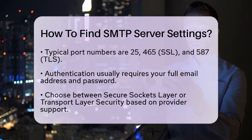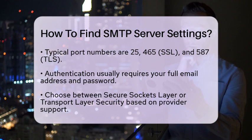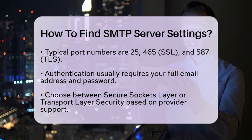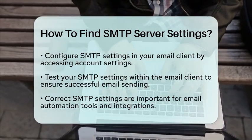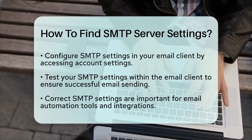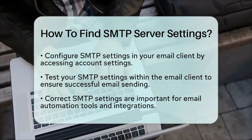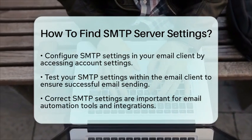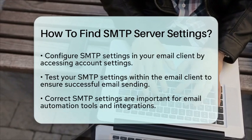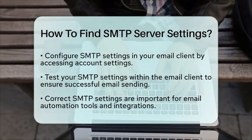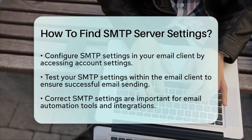Once you have gathered all the necessary information, it is time to configure the SMTP settings in your email client. Start by opening your email application and navigating to the Account Settings. Look for the section that manages your email accounts, often labeled as Account Settings or Server Settings. Select the option to edit the outgoing mail settings and enter the server address, port, and authentication details as provided by your email provider. Most email clients also allow you to test your SMTP settings to ensure that emails can be sent successfully. Having the correct SMTP settings is vital, especially when you are using email automation tools or integrations, ensuring reliable delivery and features like scheduled sending and bulk email campaigns.